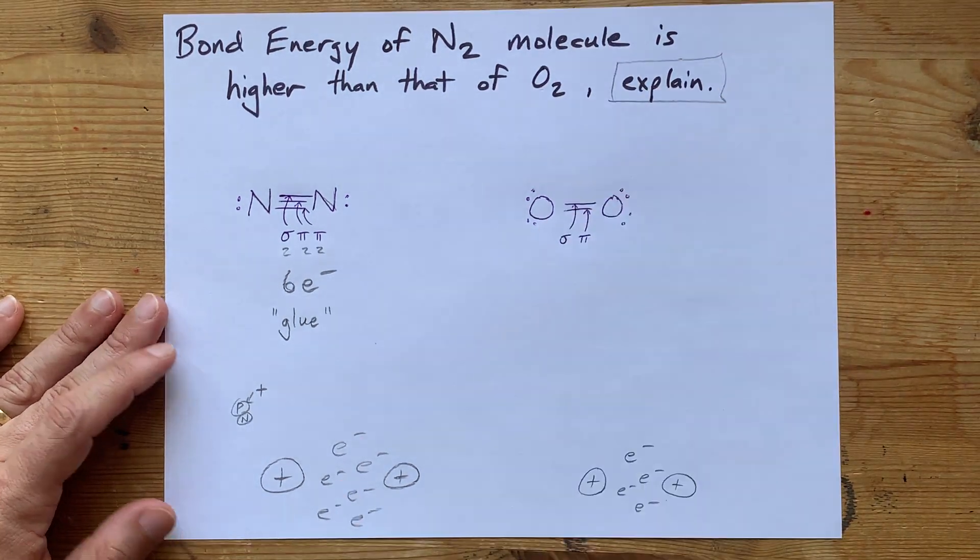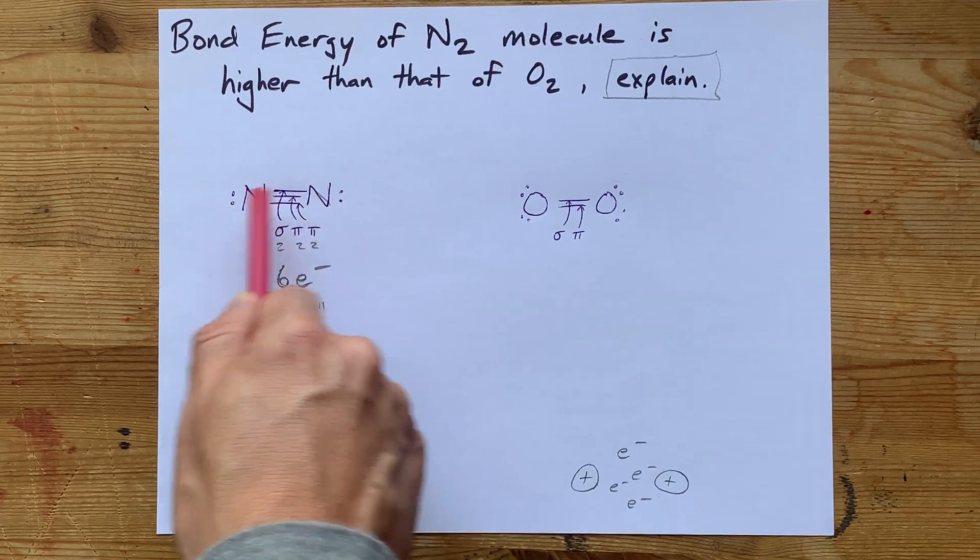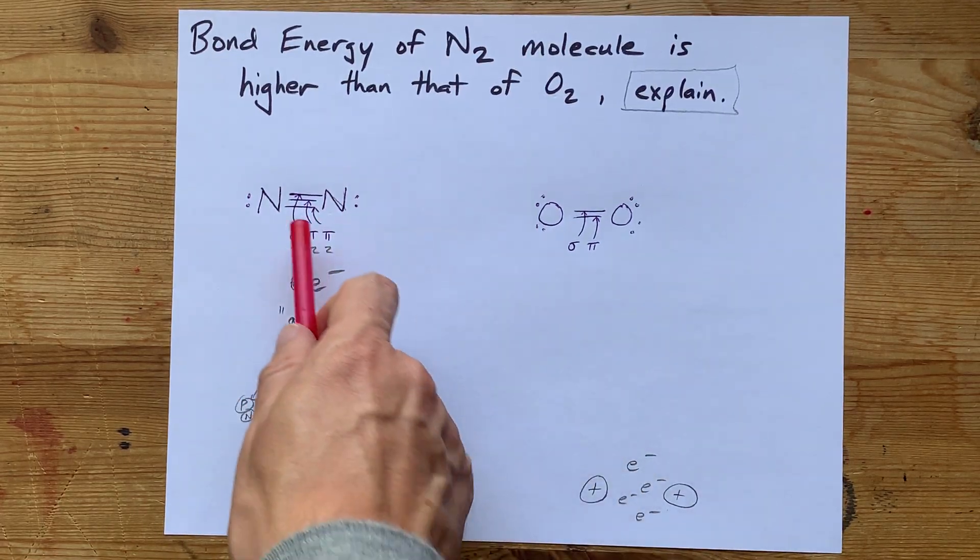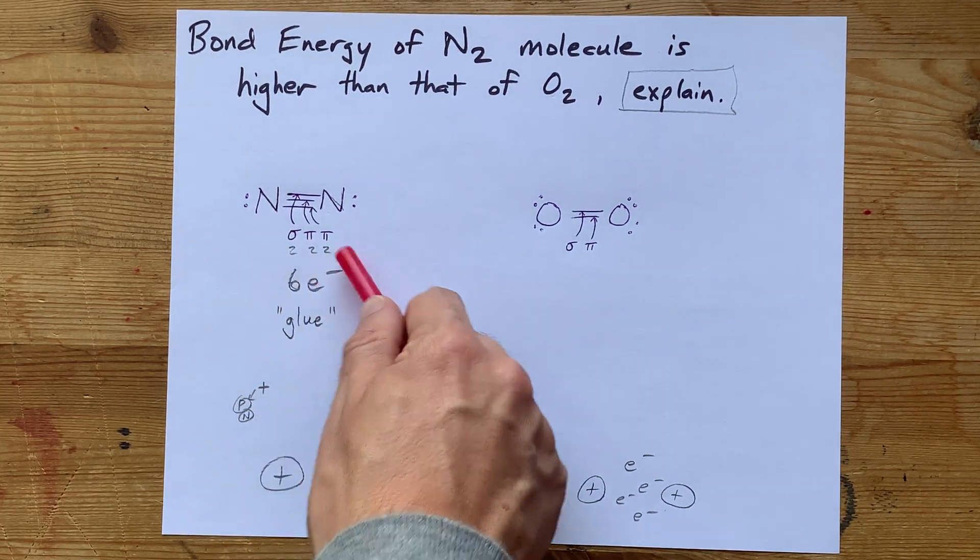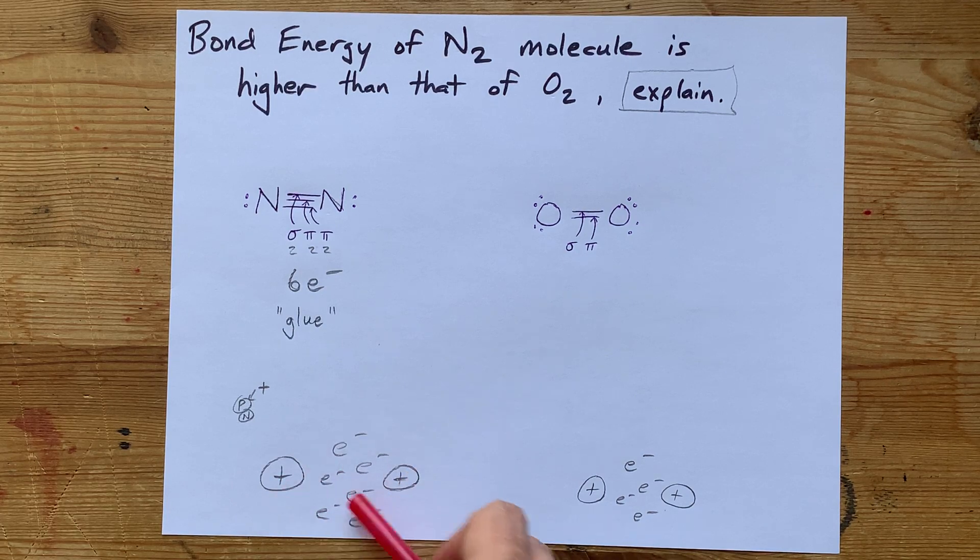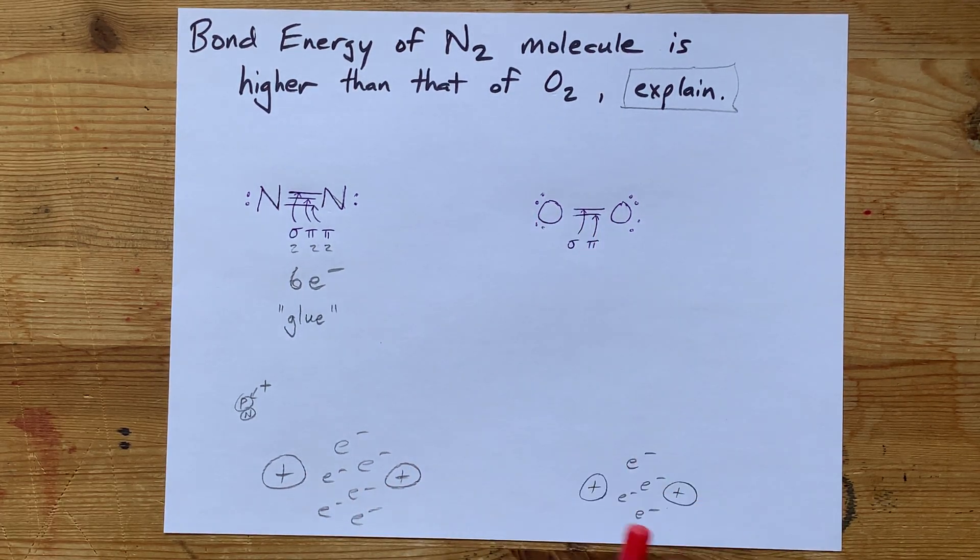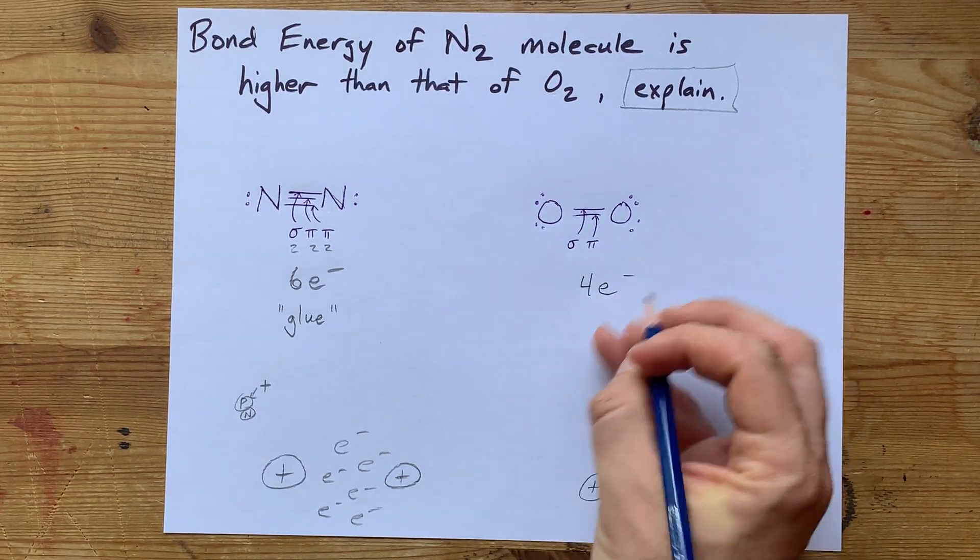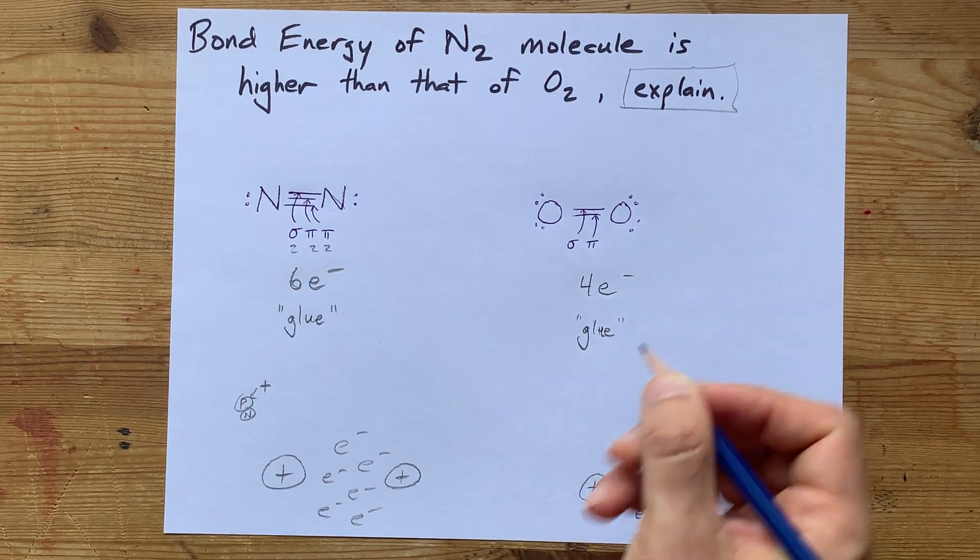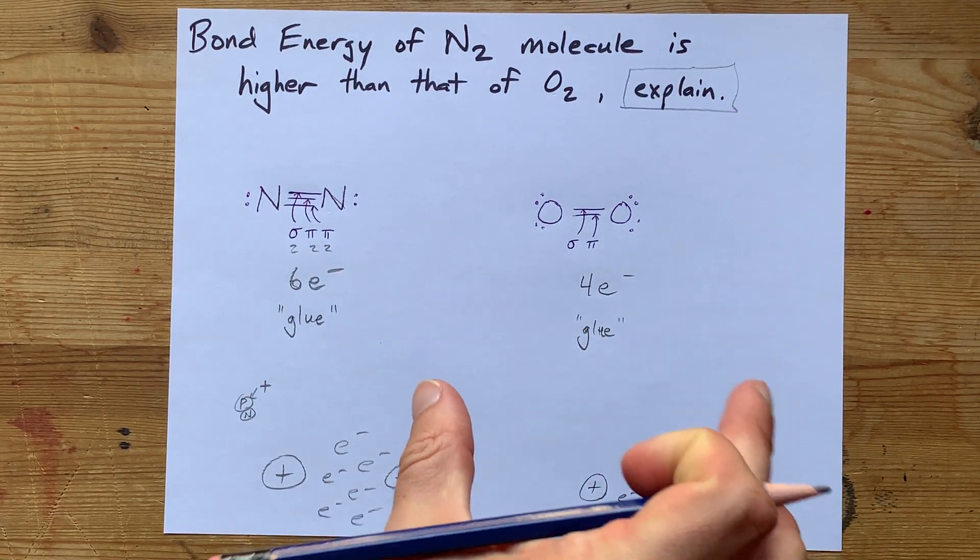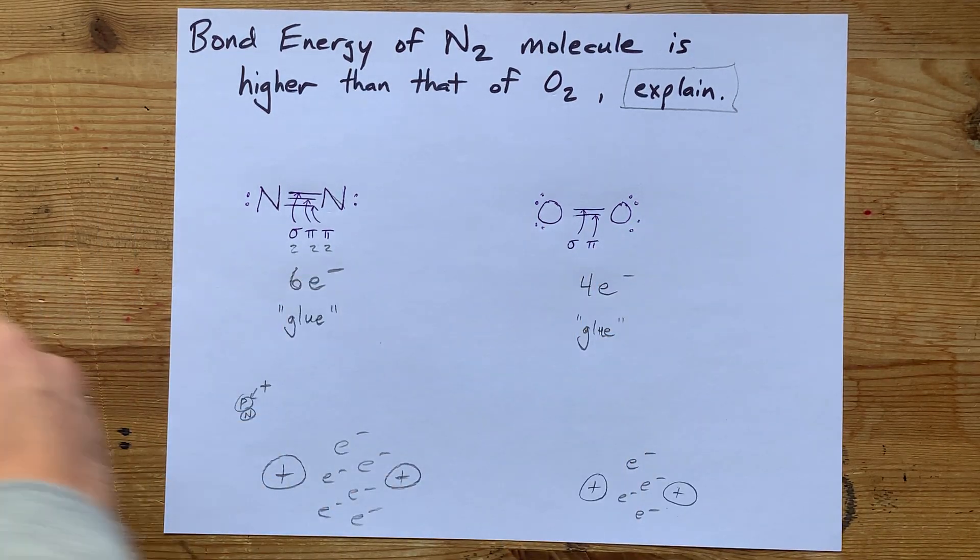The explanation that I would give is that the two nitrogens are held together with one sigma and two pi bonds—that's six electrons worth of bonding between them. Oxygen only contains one sigma and one pi bond, that's only four electrons worth. I keep saying glue because that's what holds them together, but it's all electrostatic attraction.